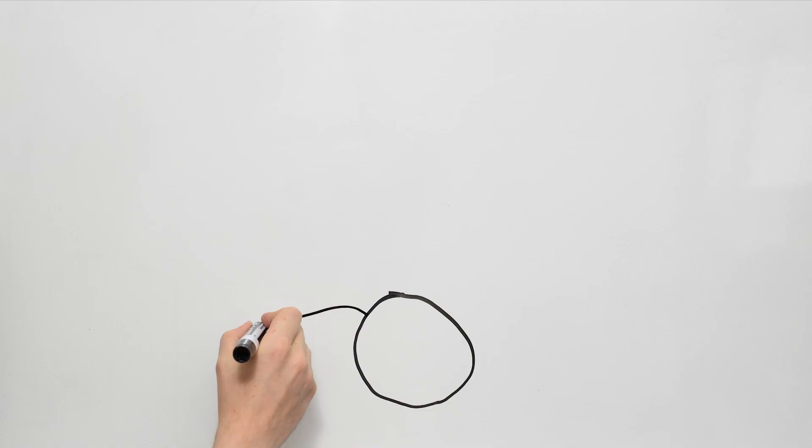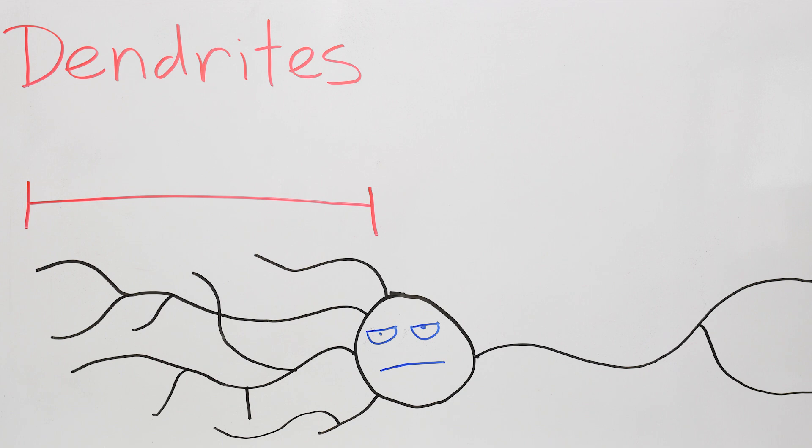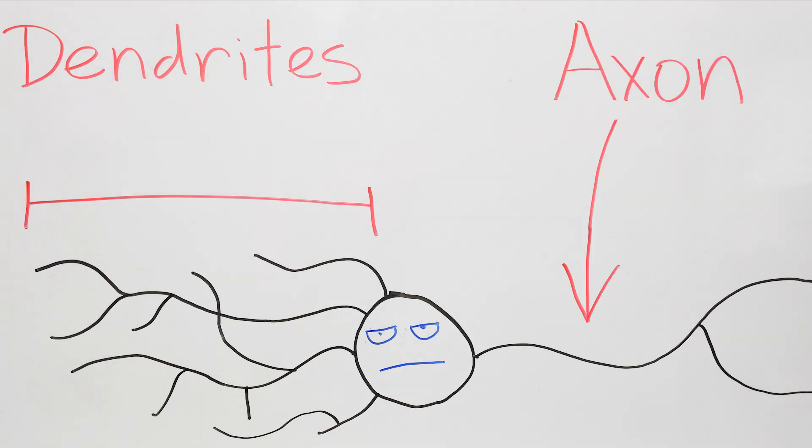First, let's do a quick review of the neuron. So, here it is. It has a number of dendrites, they're typically the inputs, and an axon, that's typically the output. The dendrites usually don't stick out too far, but the axon can grow really long.